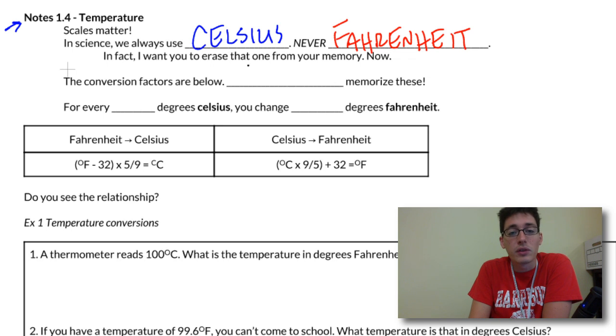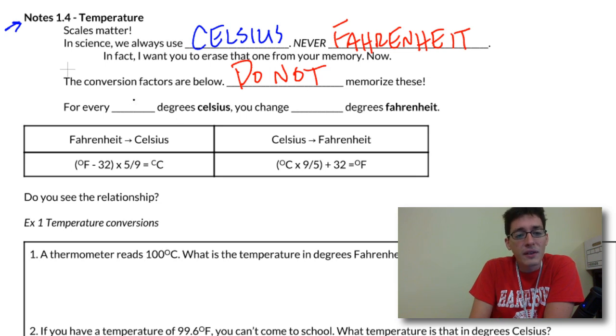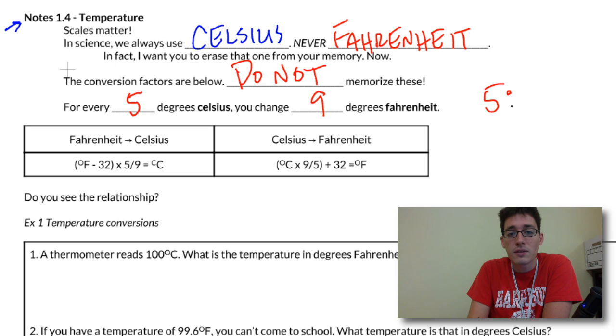The conversion factors are below, and you do not need to memorize these. Do not waste brain power memorizing something we can find on the internet. But what it is: for every five degrees Celsius we change, we change nine degrees Fahrenheit. So this is a five to nine ratio, and these ratios are always going to be coming back.